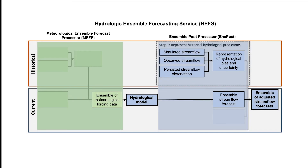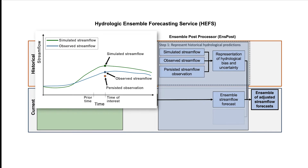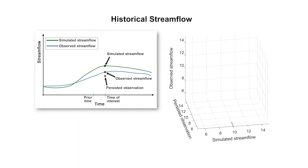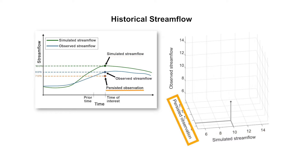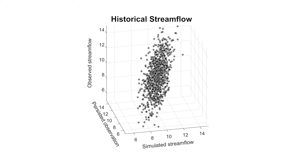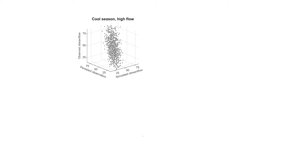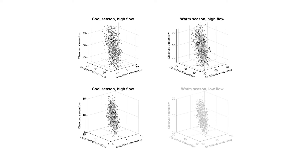Now let's walk through an example of how ONSPOST uses these three pieces of information to build a representation of historical hydrological bias and uncertainty. For the time of interest, we can plot a point in 3D space that represents the values for the historical simulated streamflow, the persisted streamflow observation, and the observed streamflow. If we repeat this process for all of the times in a streamflow simulation, we see the relationship between these three variables represented by a cloud of points. A different cloud of points is used for different seasons, different river basins, and for low versus high flows.